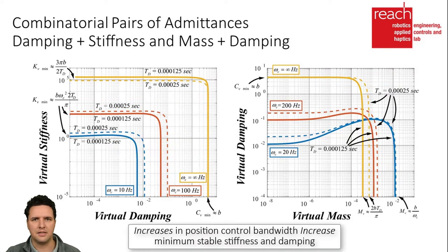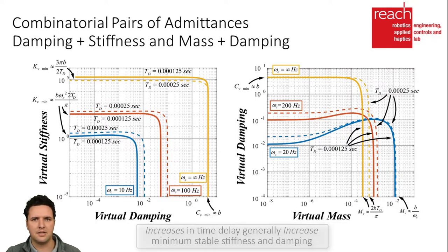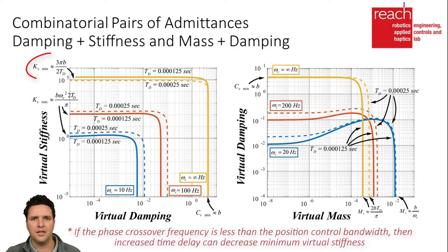Results show that increases in position control bandwidth increase the minimum stable stiffness or damping a device can stably render. Furthermore, increases in time delay generally increase the minimum damping and stiffness an admittance control loop can stably render. However, if the device's phase crossover frequency is below the position control bandwidth, then increases in time delay can decrease the minimum stable stiffness.